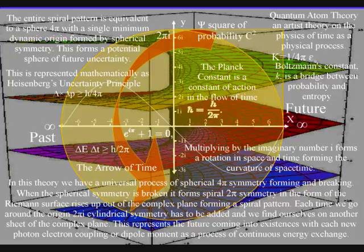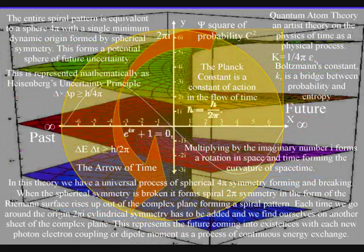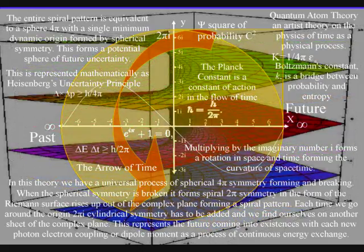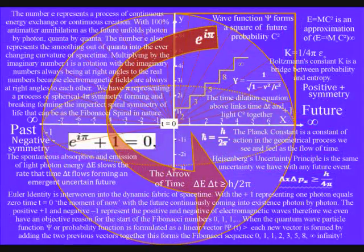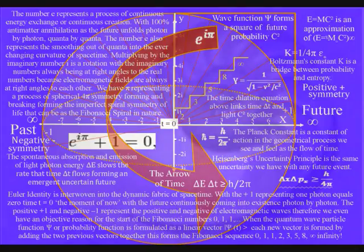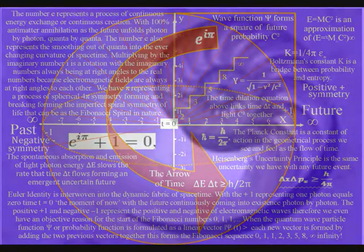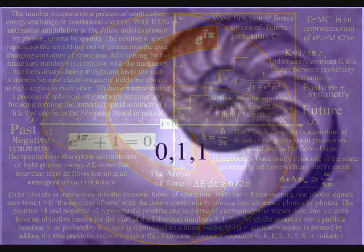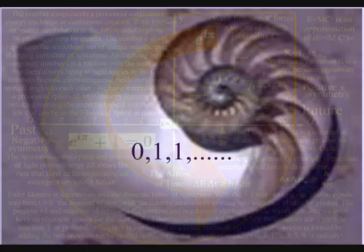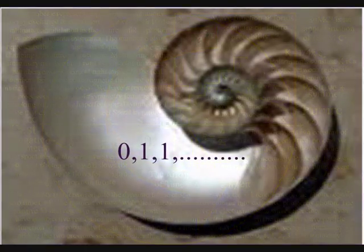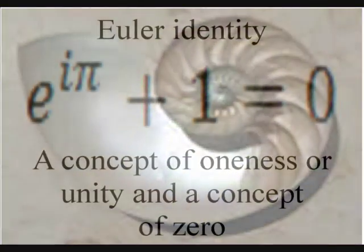As can be seen on the diagram, we already have zero representing the moment of now, time equals zero, with positive one and minus one representing the positive and negative of electromagnetic waves. Therefore, we even have the start of the Fibonacci sequence in the diagram. This is linked to Euler's identity, giving this beautiful equation a place in the structure of space and time.